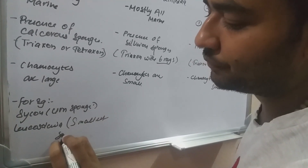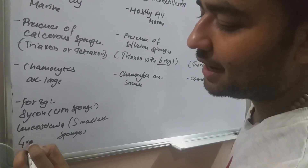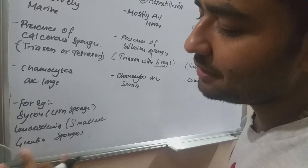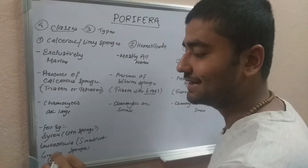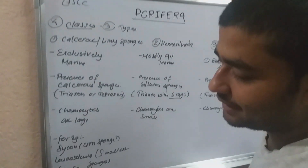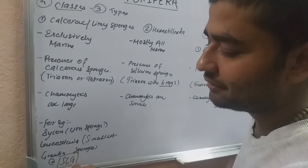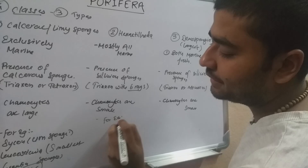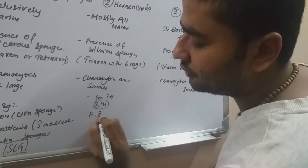For classification mnemonics: Class 1 is Calcarea (SLC), Class 2 is Hexactinellida (SLC), and Class 3 is Demospongiae (SELG). Short mnemonics are used here.